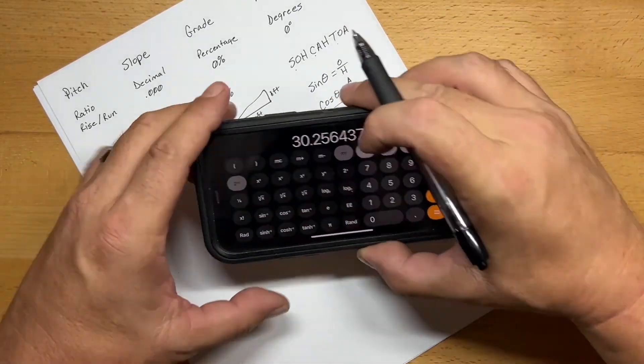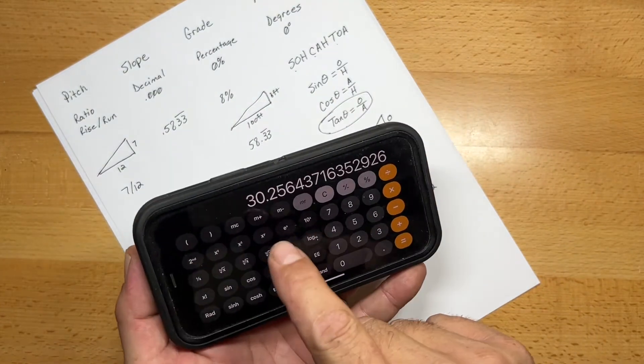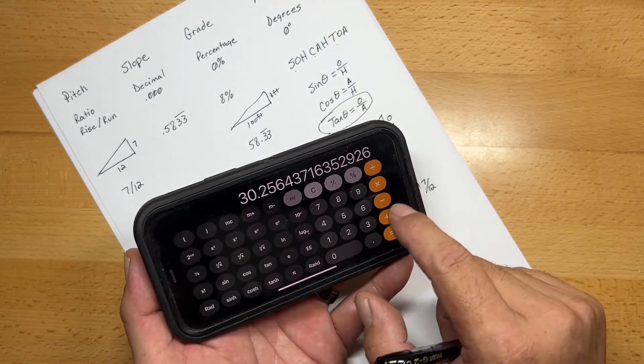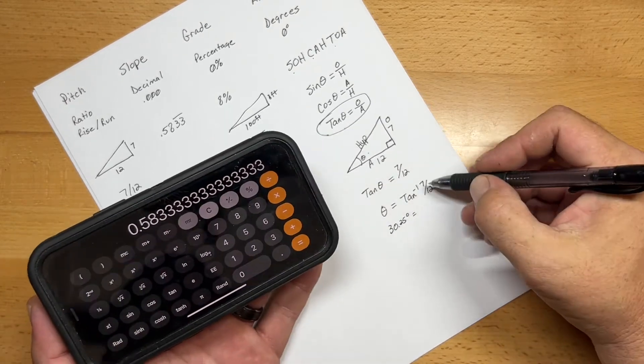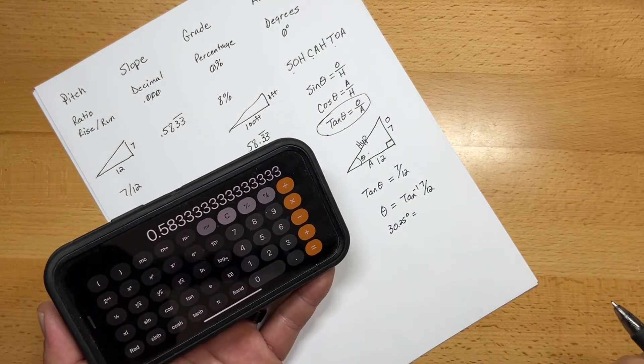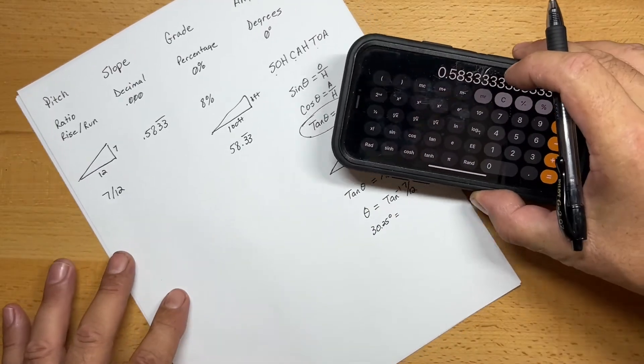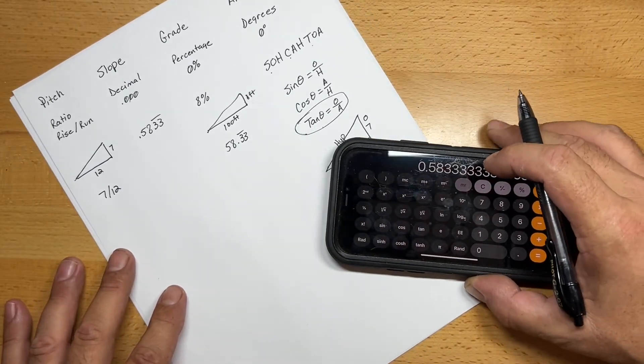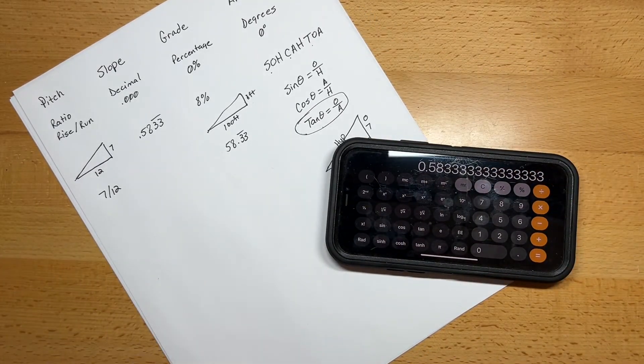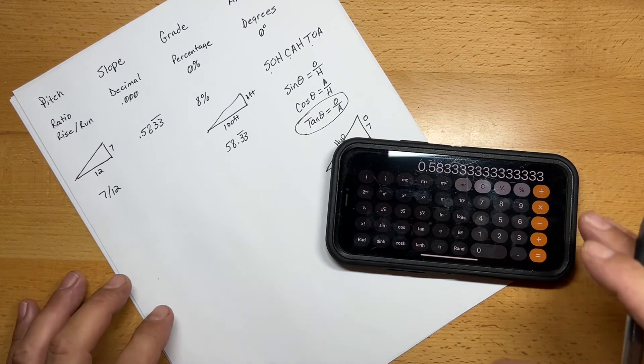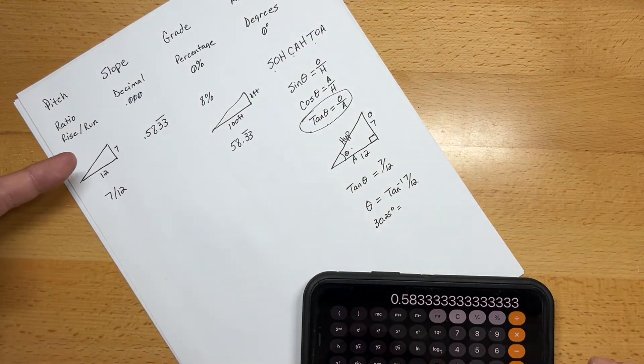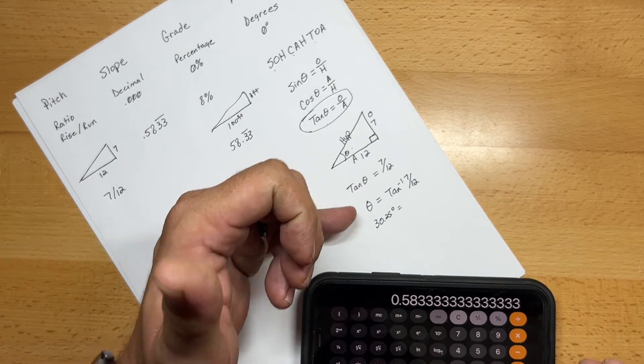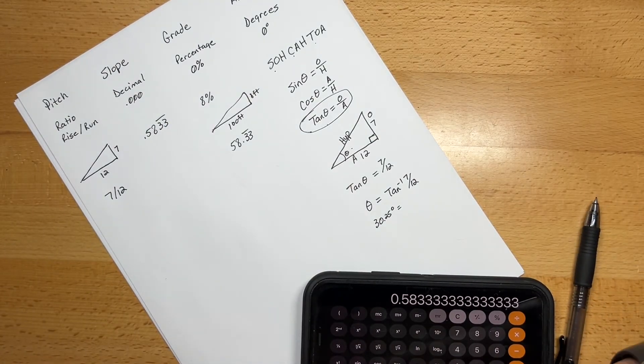That is how you get the angle when you know the rise over the run. Now if we take that and we know that degree exactly, if you were to hit tangent, then that's going to go back to that ratio, the 7 over 12 ratio, which is 0.583 repeating. So it's fairly easy once you get the hang of it. If you haven't done a lot of trig, then it can be a little tough to grasp at first, but it's actually pretty intuitive.